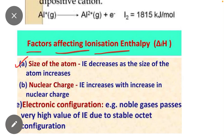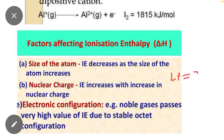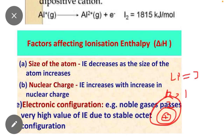First of all, size of atom. Keep in mind, ionization energy always decreases as size of atom increases, because it is easy to remove the electron. For example, lithium has 3 electrons: 2 and 1 — a small size, compared to sodium. Sodium has greater size, so it is easy to remove an electron from sodium as compared to lithium. That is why greater the size, lower will be the ionization energy.